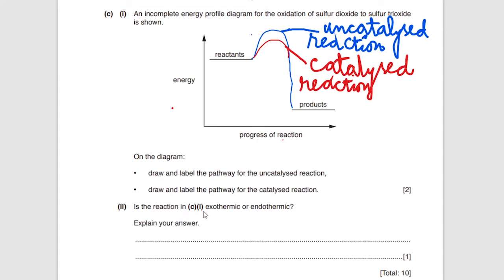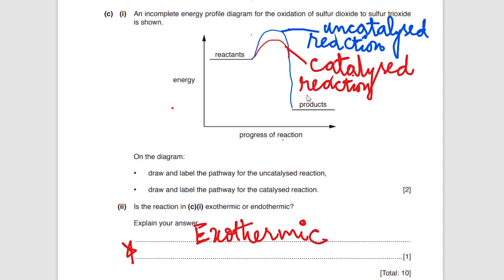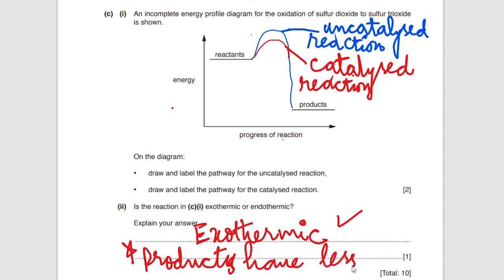The next part of the question asks: is the reaction exothermic or endothermic? Explain your answer. Yes, this is an exothermic reaction because the products have less energy than the reactants. This is how you describe an exothermic reaction after examining the energy profile diagram: products have less energy than the reactants.